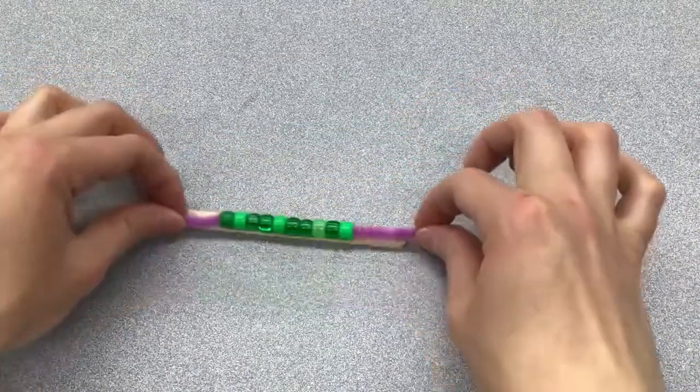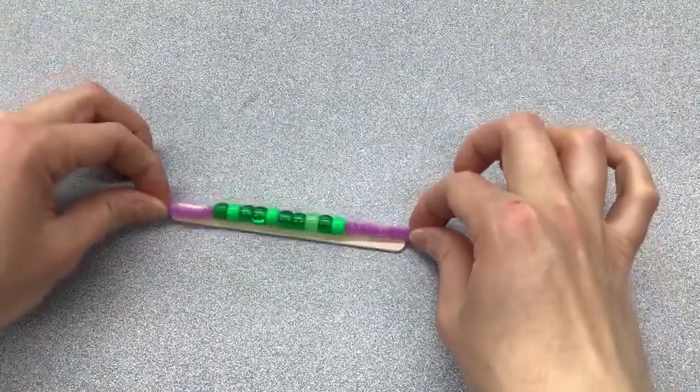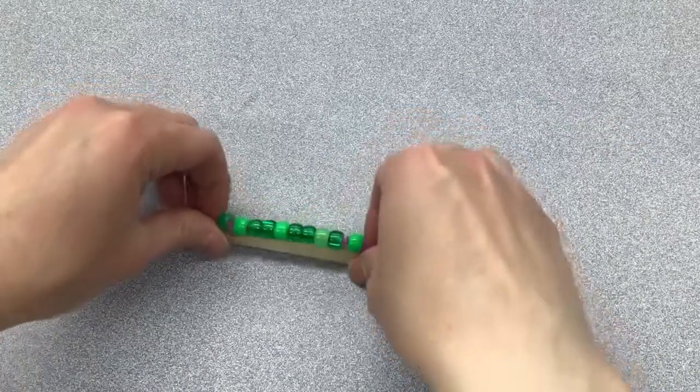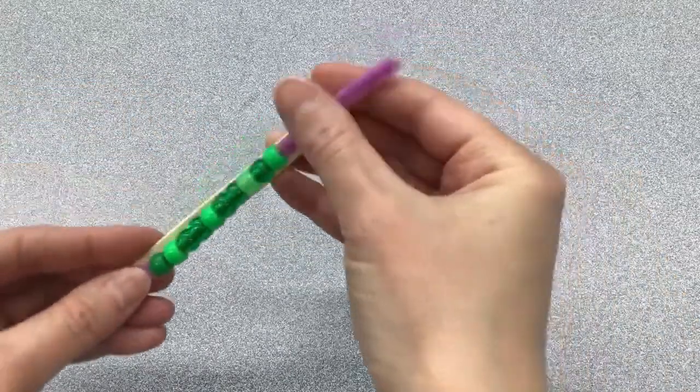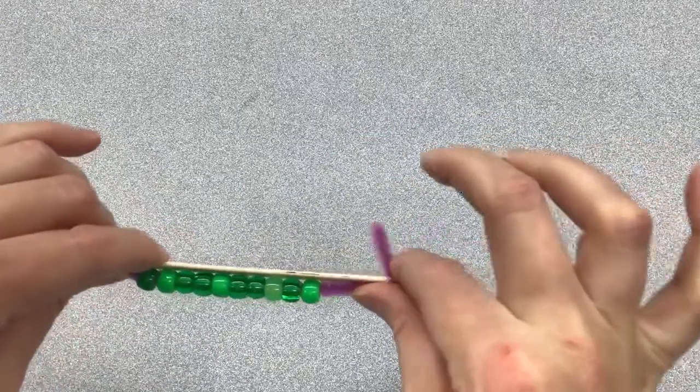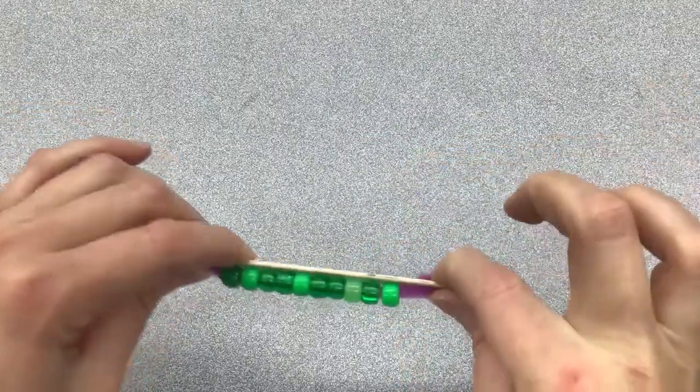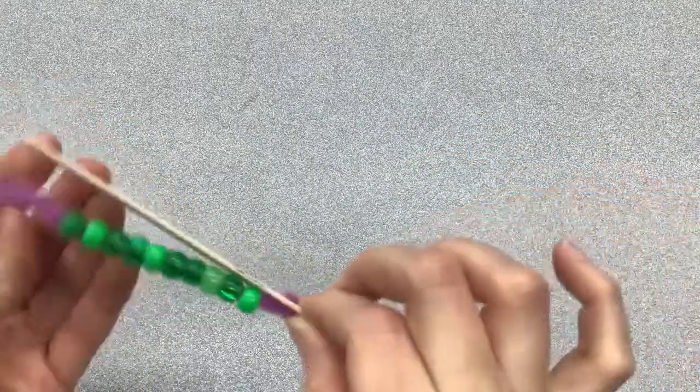And then we're going to put the pipe cleaner with the beads on top of the popsicle stick. And it might roll because the beads are kind of round. And then I'm going to fold the ends of the pipe cleaner over the ends of the popsicle stick.